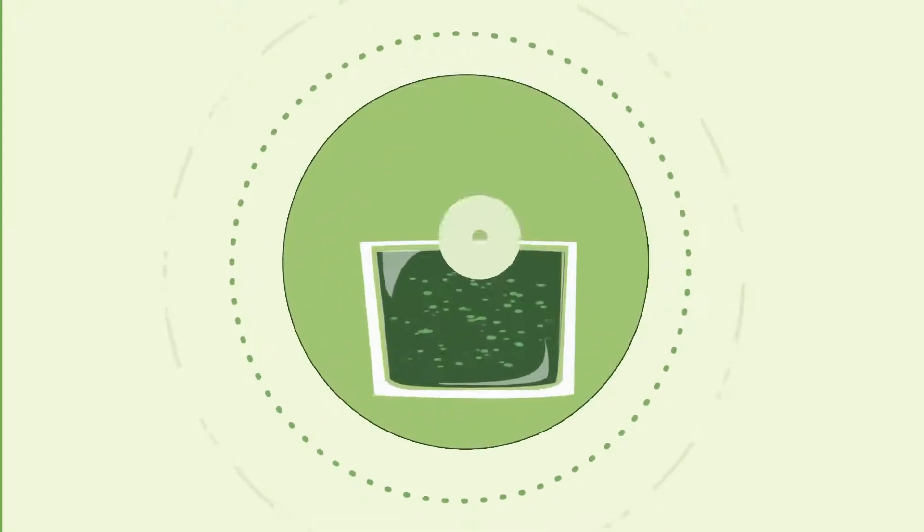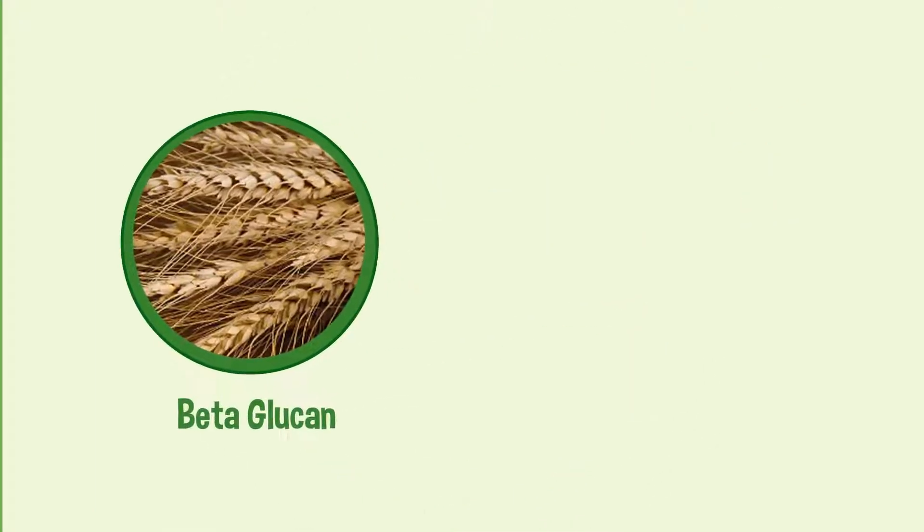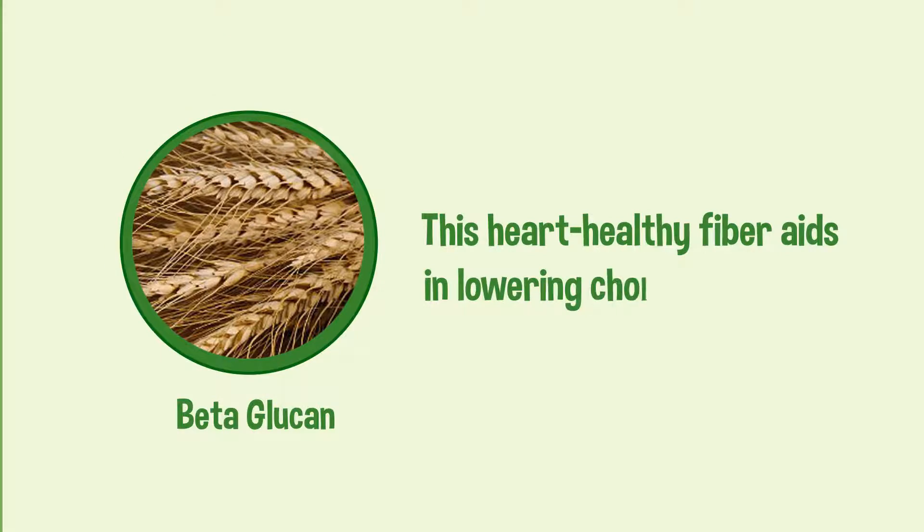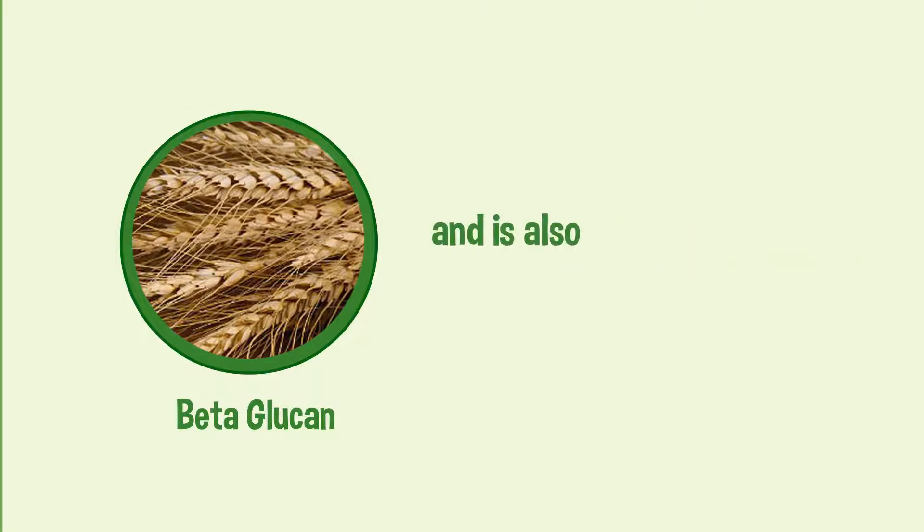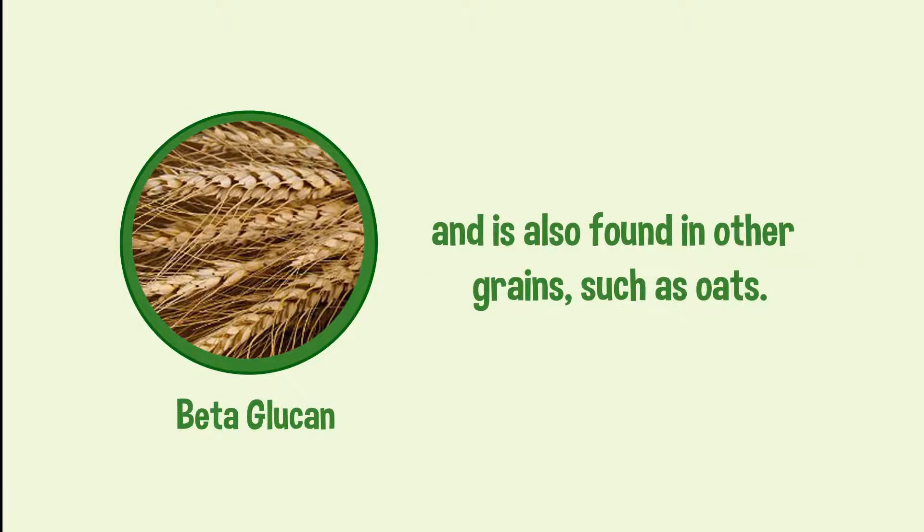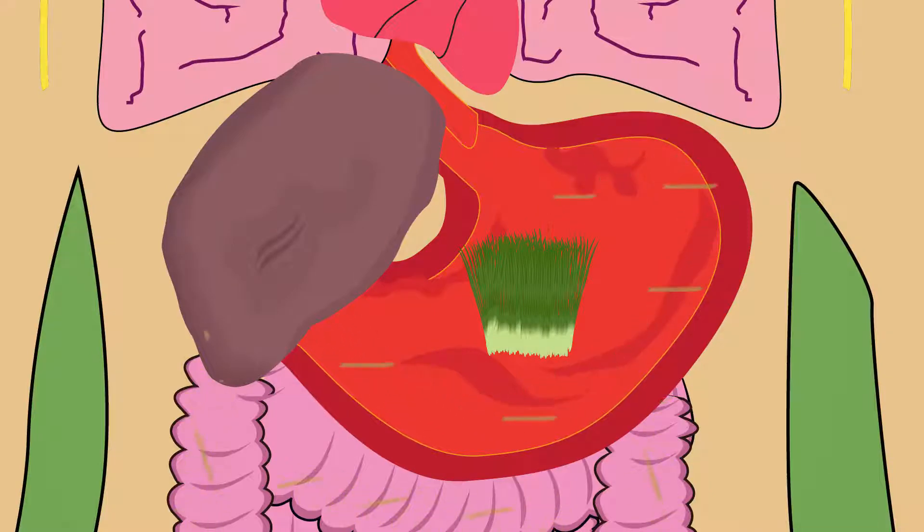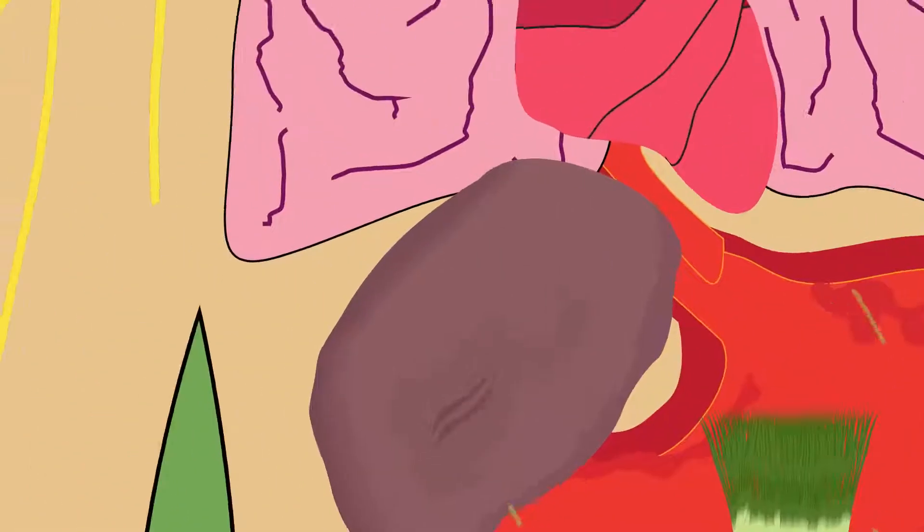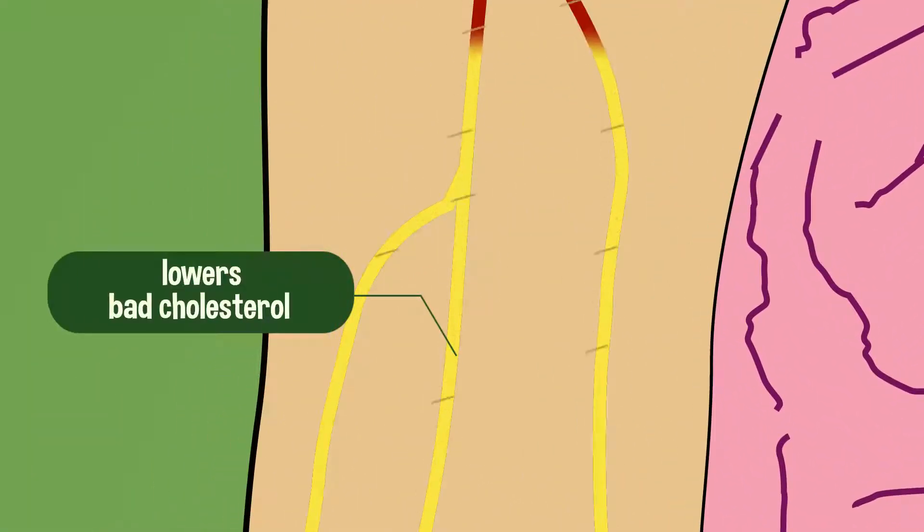L lowers cholesterol and blood sugar. Barley contains an important soluble fiber called beta-glucan. This heart-healthy fiber aids in lowering cholesterol levels and is also found in other grains such as oats. This soluble fiber dissolves and binds with fatty acids in the body which lowers bad cholesterol.